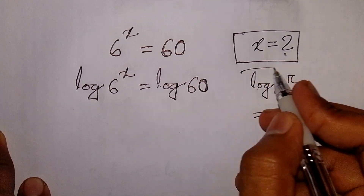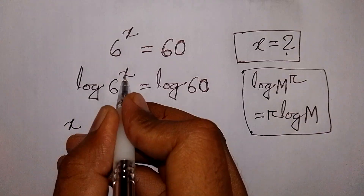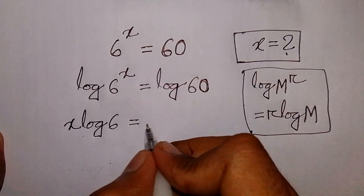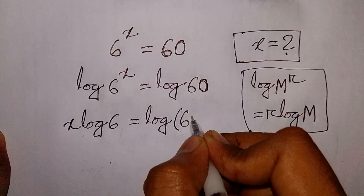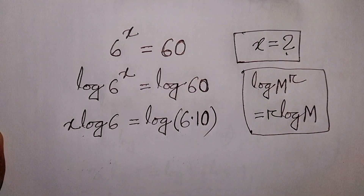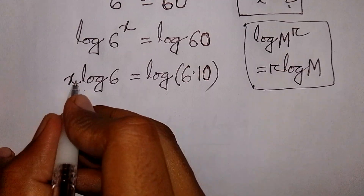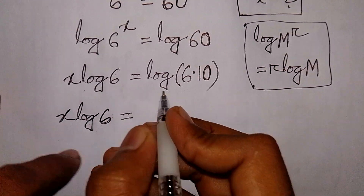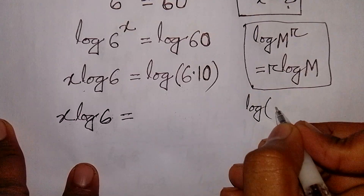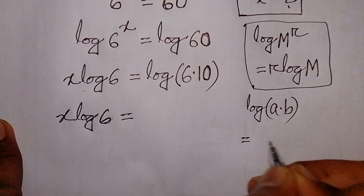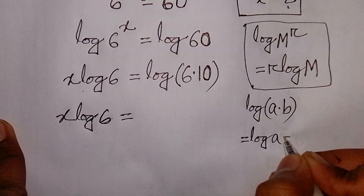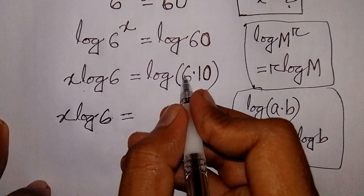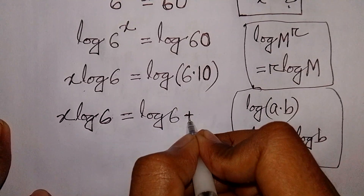This power moves to the base, so it will be x times log 6 is equal to log 60. Now log 60 can be written as log of 6 times 10. We apply the formula log of a times b is equal to log a plus log b. So it will be log 6 plus log 10.